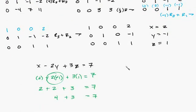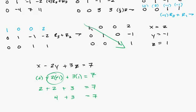That's basically it for this. I didn't get into too many specifics about interchanging rows — I'll do other examples like that — but this was just to get the idea of this method. All you're doing is getting 1's diagonally: you start off by getting a 1 here, then a 0 here, then a 0 here, then a 1 here, then a 0 here and a 0 here, then a 1 over here, a 0 here, a 0 here. When you have the 1's on the diagonal and 0's everywhere else, you've got your answers. The 1 means 1x, 1y, 1z — so make sure you label everything x, y, z.